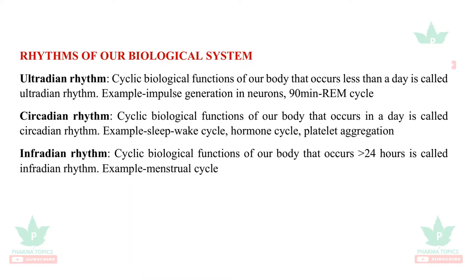There are different rhythms in our human system. One is ultradian rhythm — it is a cyclic biological function of our body which occurs in less than a day. Example: impulse generation in neurons, which happens within 90 minutes; that is, a rapid eye movement cycle which happens in the eyes.